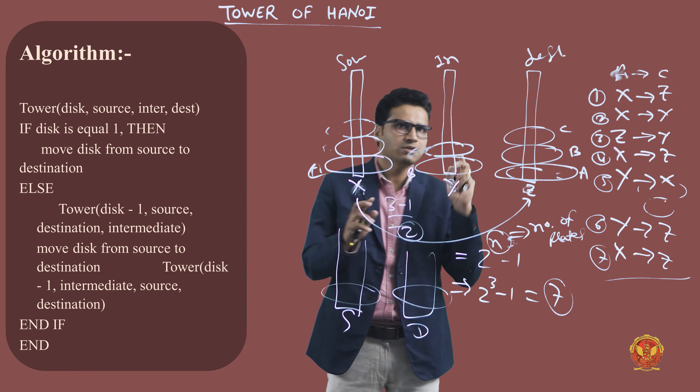Then we call recursively again — we move from source to destination, then call recursively once more to solve the problem. This is all about the Tower of Hanoi problem. Thank you so much.